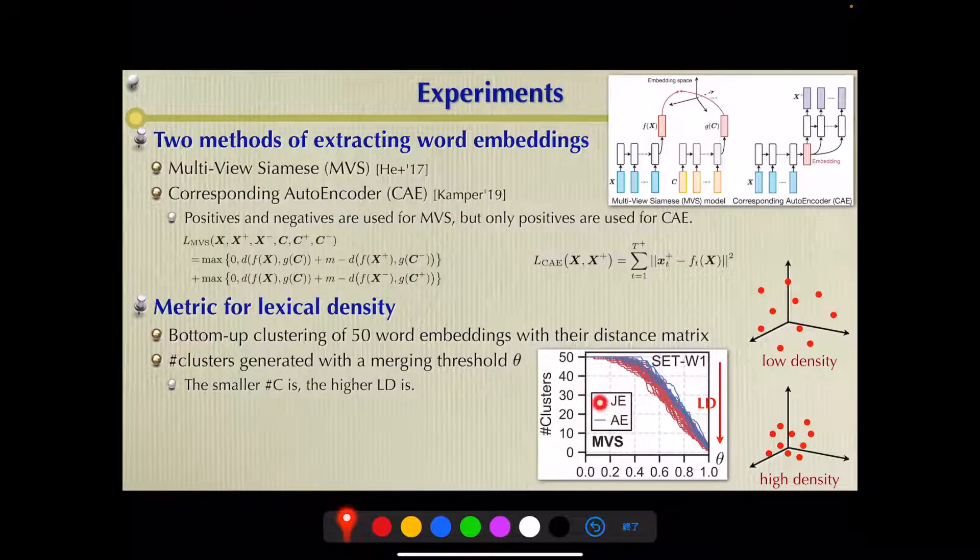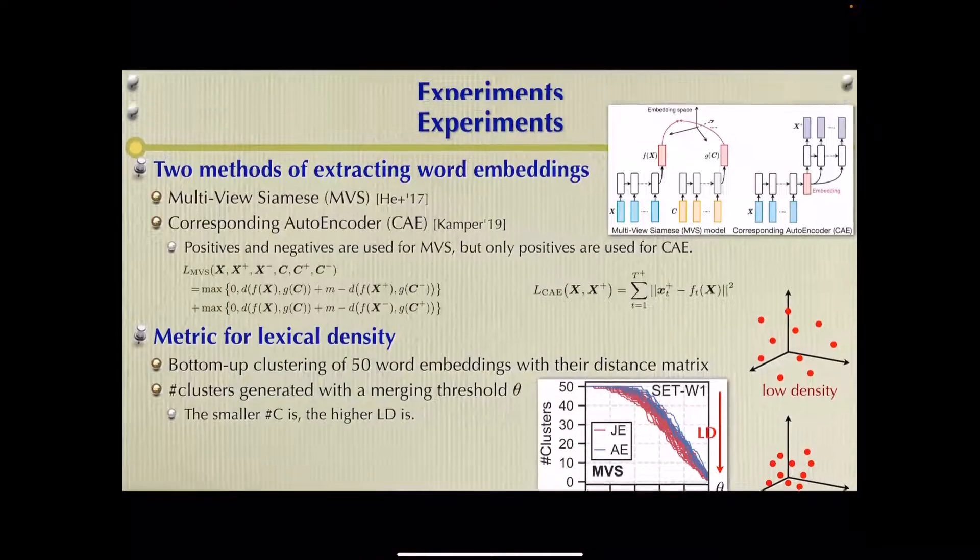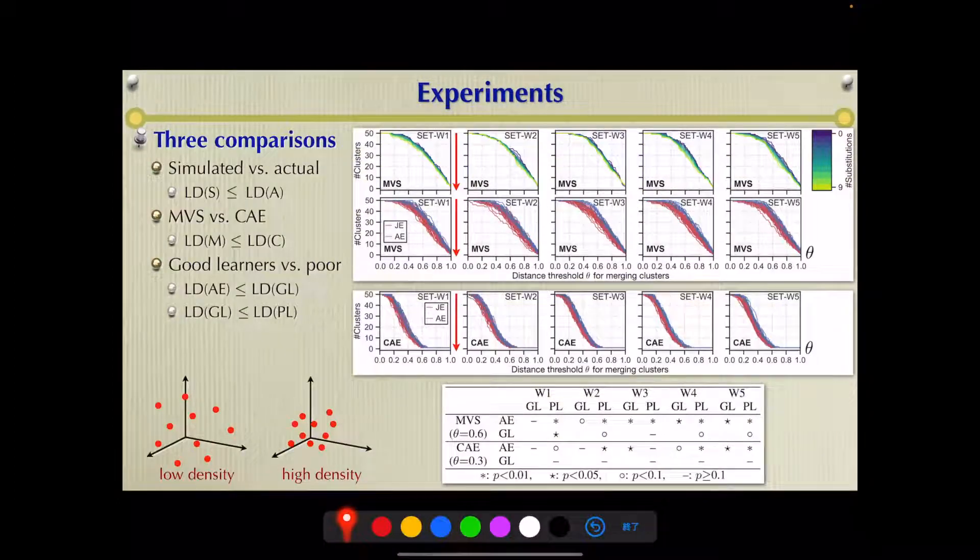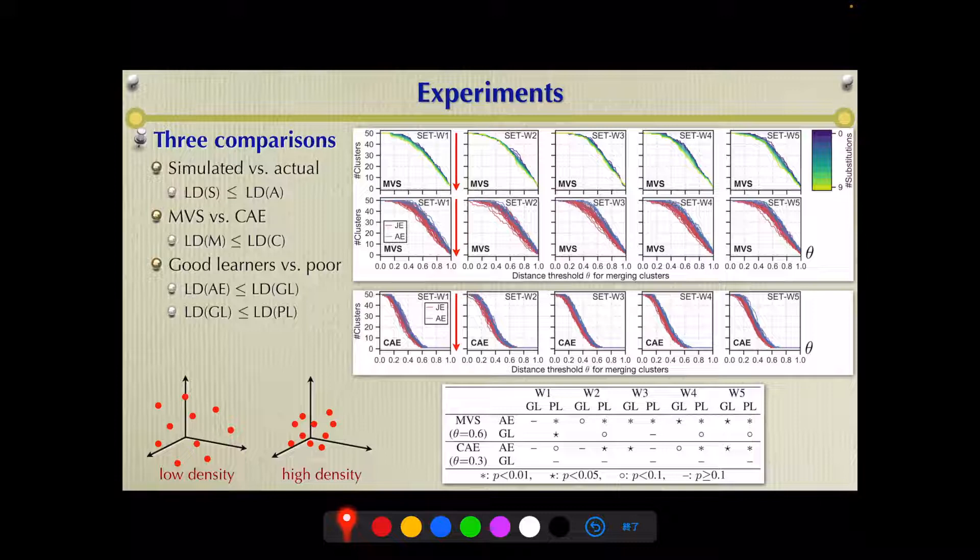Japanese English has higher lexical density, something like this. Experimental results are shown here. Comparison between Japanese English and American English is done under different conditions. In any graph, lexical density of Japanese English is higher than that of American English, but detailed discussions are omitted in this presentation. Please read our paper.